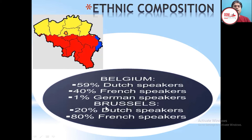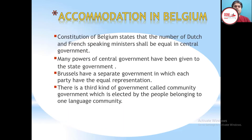So what did they do? This is the accommodation of Belgium. The constitution of Belgium states that the number of Dutch and French-speaking ministers shall be equal in the central government. They wanted to maintain equality in the central government, and that is why the number of ministers from both communities is equal.